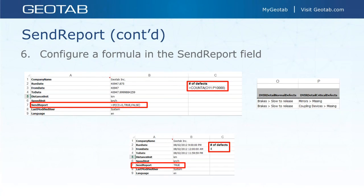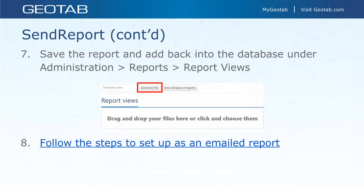You do need to get into Excel a little bit and brush up on IF statements and true/false logic, but that's what send report does. Once done, add the report back into your database under Administration > Report Views, add the Excel file in, then follow the steps to set it up as an emailed report. There are no other settings to enable — just put that formula in, hide the data tab again, and add it back into your database.